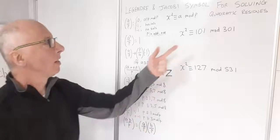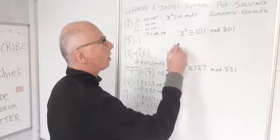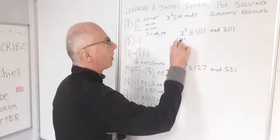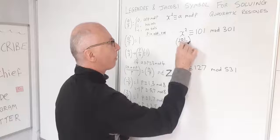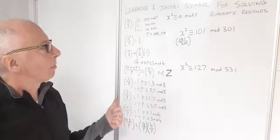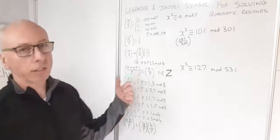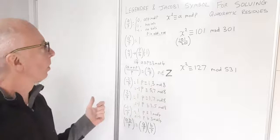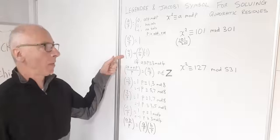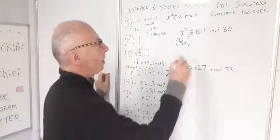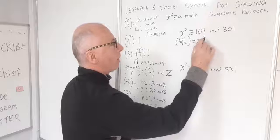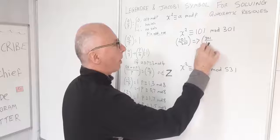Let's look at the first question. The Legendre symbol for this one would be (101/301). Now I need to manipulate this. I always try to start by flipping it, so now I've got (301/101).